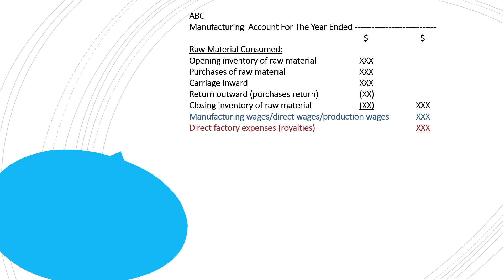After recording these direct costs, we make the total of all three items — raw material consumed, manufacturing wages, and direct factory expenses. We add these three items and the answer is recorded with the name 'Prime Cost.' As I told you in the first lecture, prime cost and direct cost are the same thing.